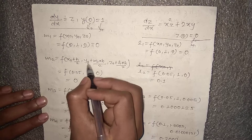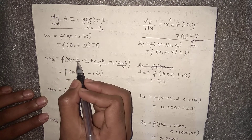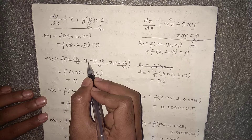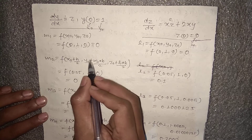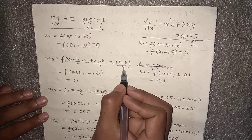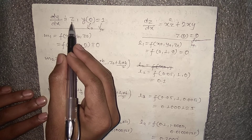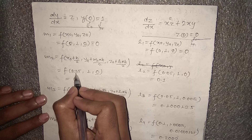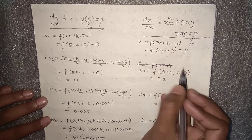For m2 = f(x₀ + h/2, y₀ + m1·h/2, z₀ + l1·h/2): x₀ + h/2 = 0 + 0.05 = 0.05; y₀ + m1·h/2 = 1 + 0 = 1; z₀ + l1·h/2 = 0 + 0 = 0. So m2 = 0. For l2, copying values (0.05, 1, 0) into the dz/dx function, we get l2 = 0.1.